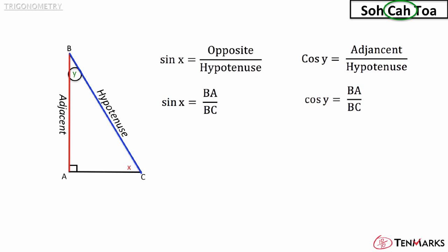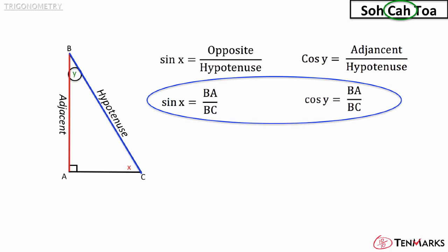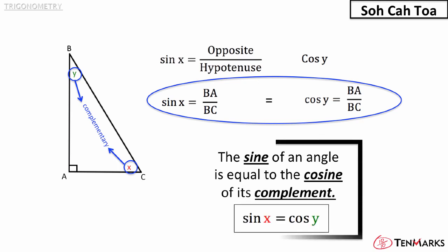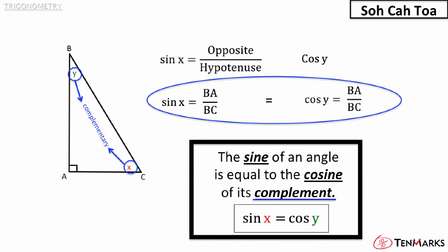What do you notice about the sine of x and the cosine of y? They are exactly the same. Since this is a right triangle, the sum of angle x and angle y is equal to 90 degrees, which means that x and y are complementary angles. The following statement is true for all angles: the sine of an angle is equal to the cosine of its complement.